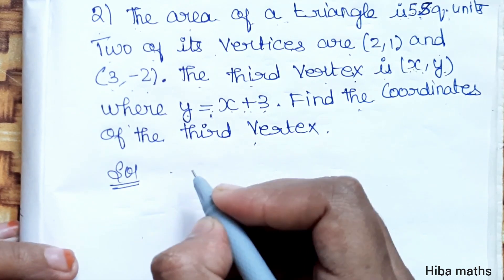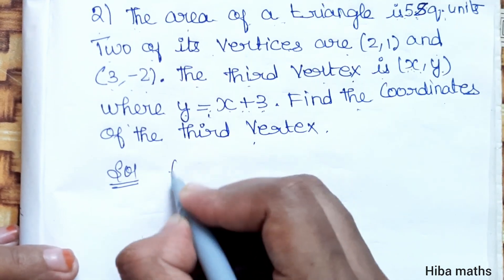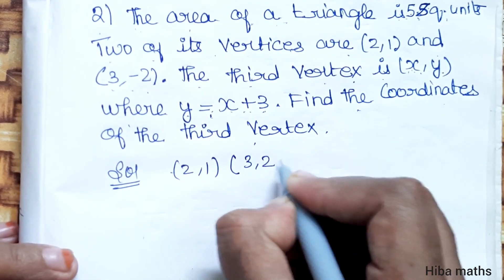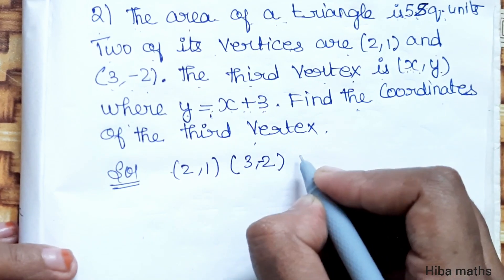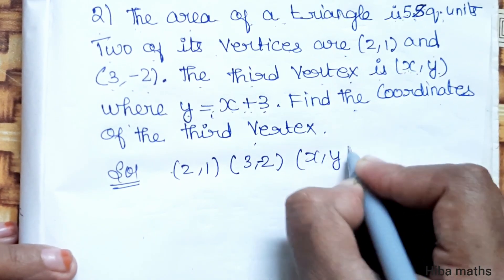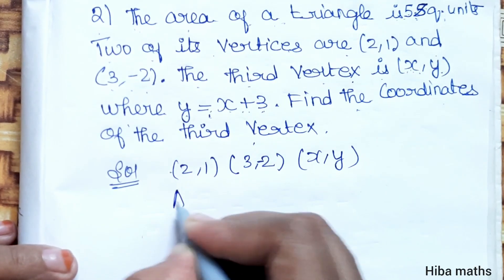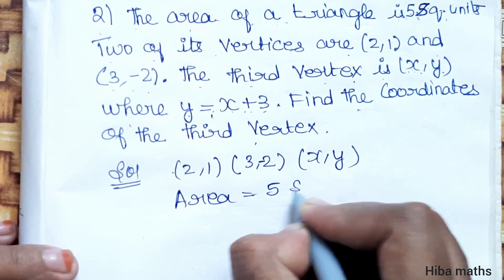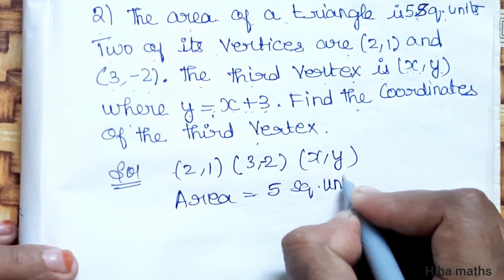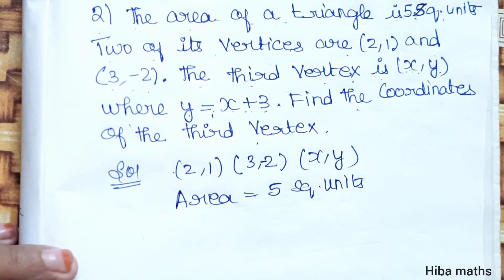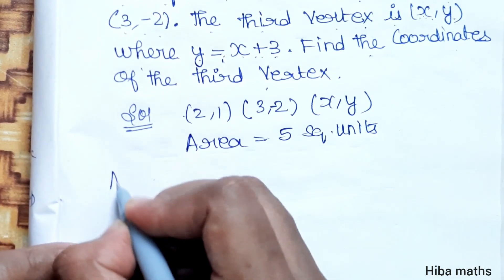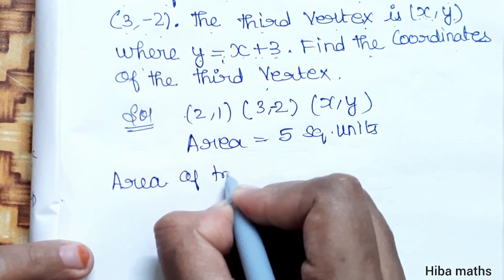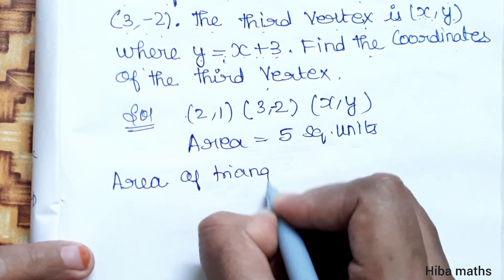First, the given points are: (x1, y1) = (2, 1), (x2, y2) = (3, -2), and the area is equal to 5 square units. Now we apply the area of triangle formula.